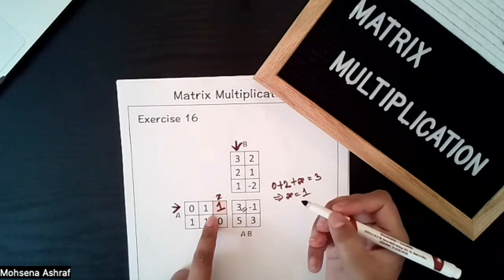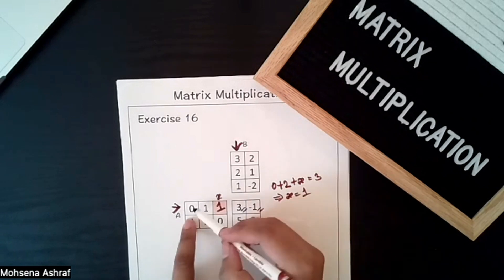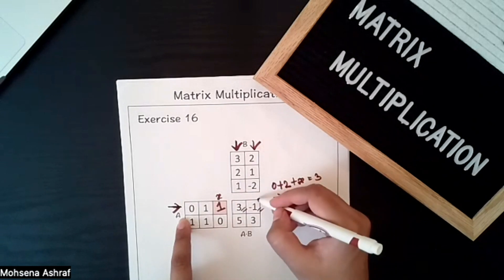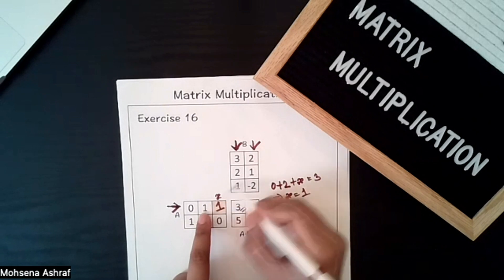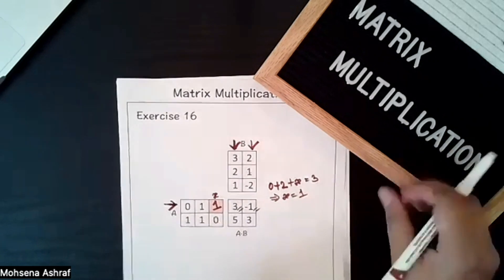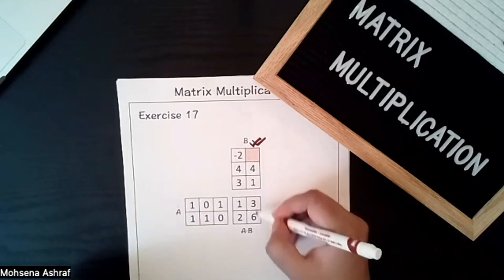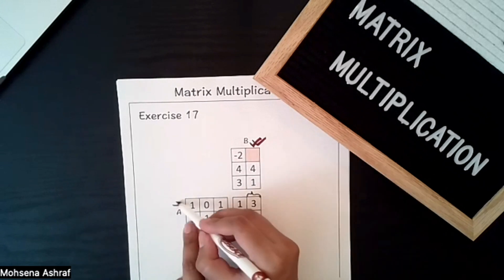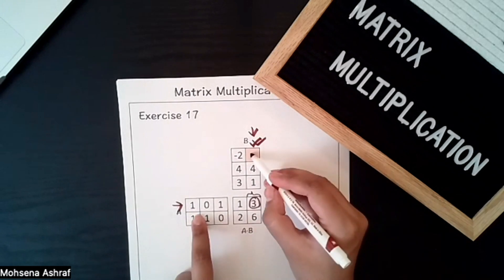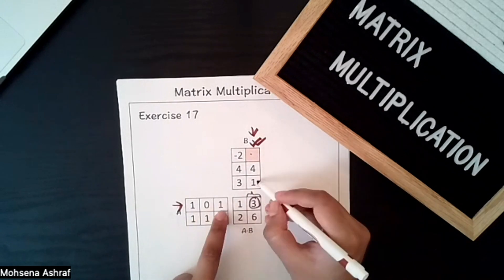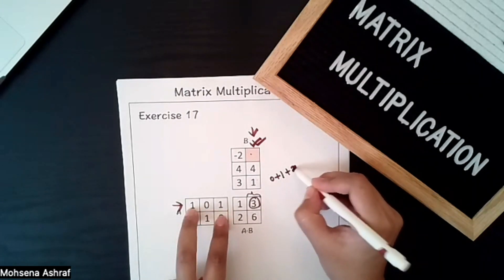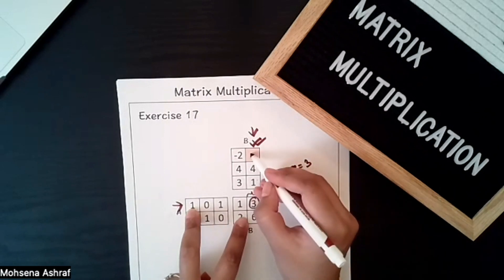We can verify with another row: 0×2 + 1×1 + 1×(−2) = 1−2 = −1, which checks out. For another value, 1×something + 0×4 + 1×1 = 3: so 0+1+x = 3, giving 1+x = 3, x = 2. To verify, the position (2,2): 1×2 + 4×1 + 1×0 = 2+4 = 6.